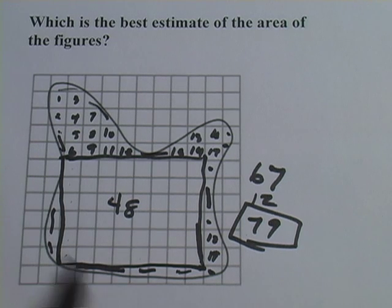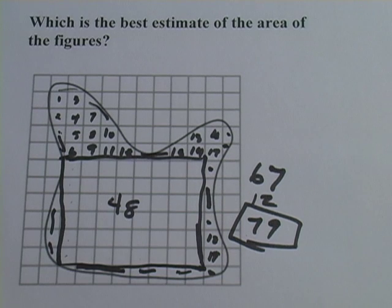So strategy, box off part of it and then count the rest of them and make your best guess about the partial ones. Okay. Let's look at one more of these.